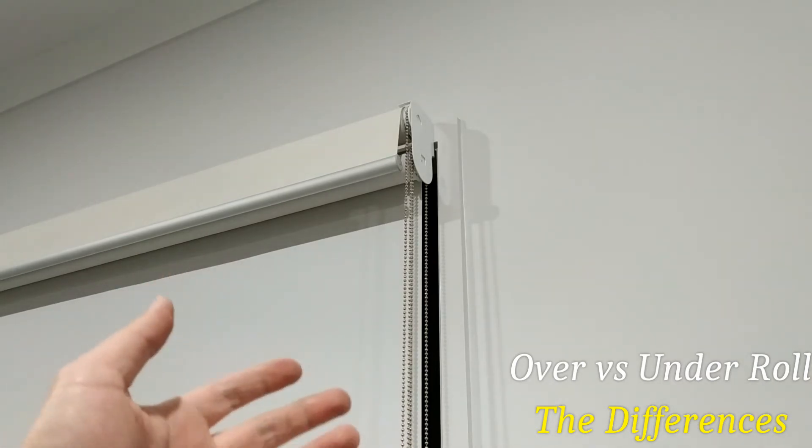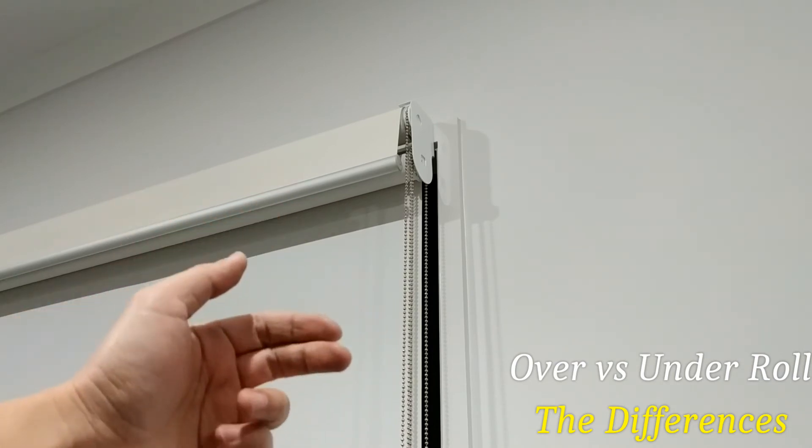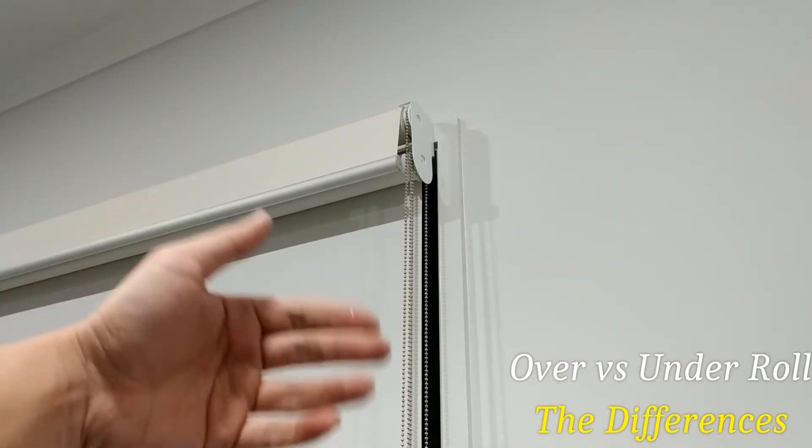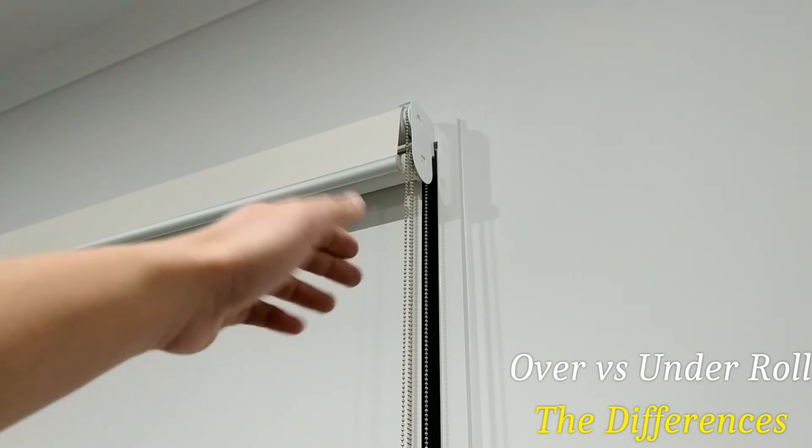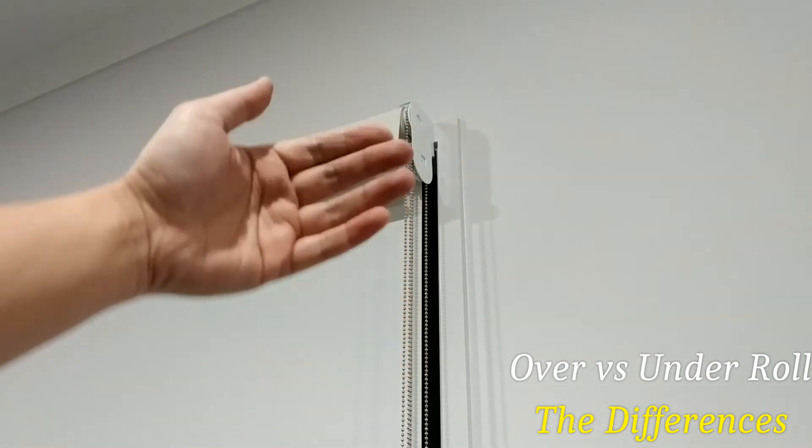I think a lot of people think the rolling over is more aesthetically pleasing and cleaner, so you don't actually see the roll, but you just see the front of the blind coming down.